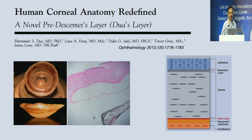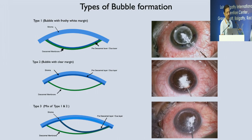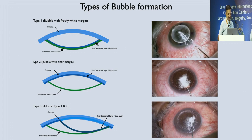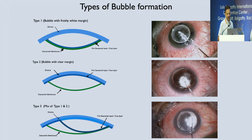Professor Dua described the pre-Descemet's layer, or Dua's layer, which is basically a surgical layer. When we inject air into the stroma, you get a Type 1 bubble — a separation between the stroma and the pre-Descemet's layer — which starts in the center and goes to the periphery. A Type 2 bubble is a separation between the pre-Descemet's layer and the Descemet's membrane; it has a sharp margin and can start from the periphery and go across the entire cornea. You can also get a mix of Type 1 and Type 2.